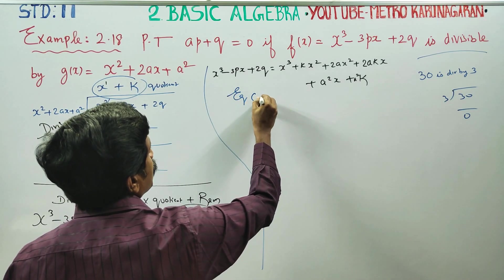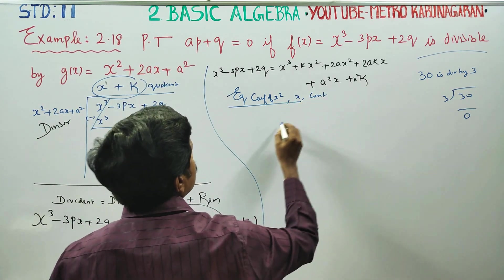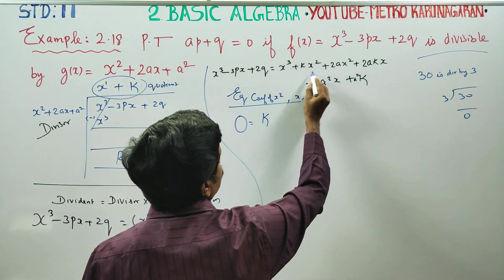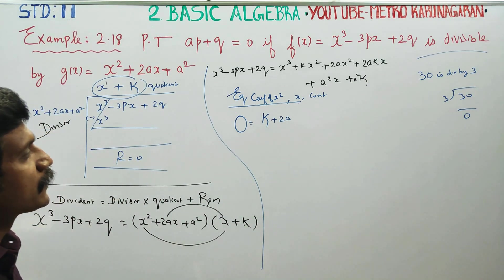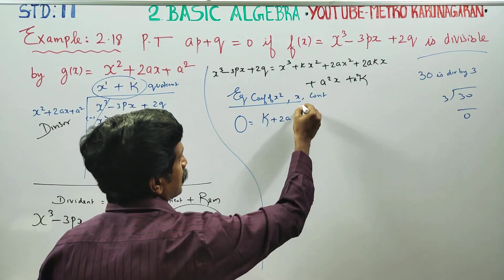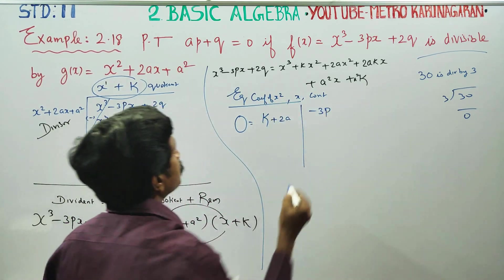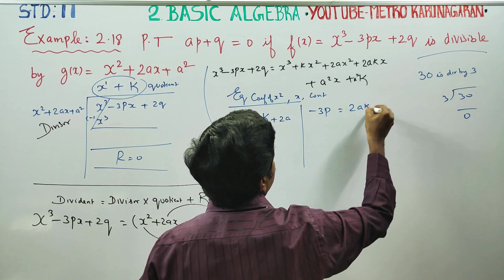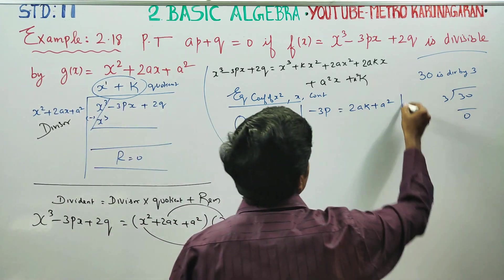Equating coefficients of X squared: K plus 2A. For the next stage, equating coefficients of X: minus 3P equals 2AK plus A squared. This is the X coefficient on the left side.